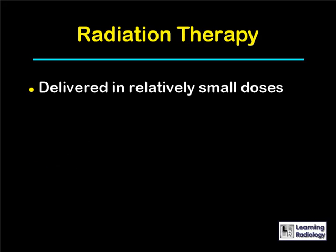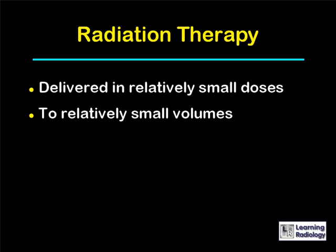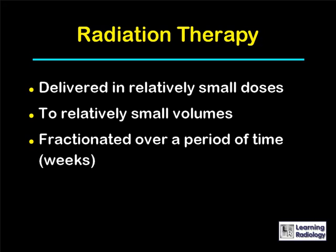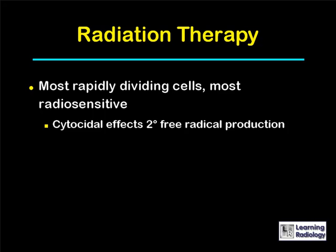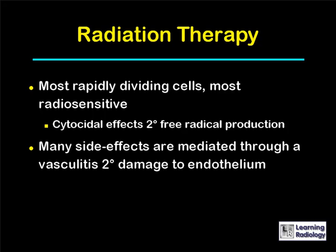Radiation therapy is usually delivered in relatively small doses to relatively small volumes of tissue over a period of time, usually a matter of weeks, which is called fractionation. All means are used to deliver the highest possible dose to the tumor while sparing the normal tissue adjacent to the tumor. The most rapidly dividing cells are the ones that are usually the most radiosensitive. The cytocidal effects of radiation are mostly due to free radical production. Many side effects of radiation are mediated through a vasculitis secondary to damage to the endothelial cells.